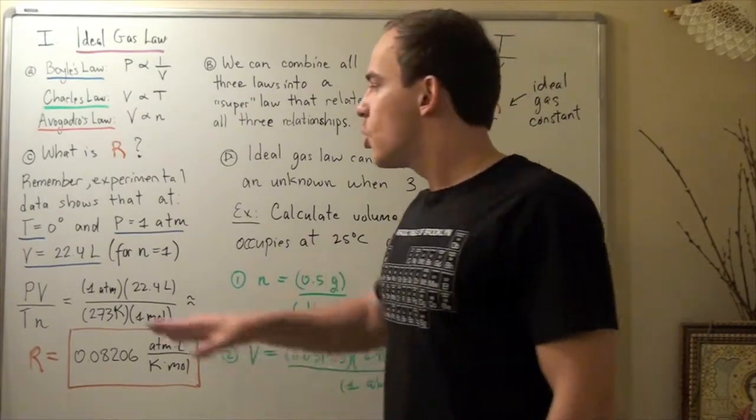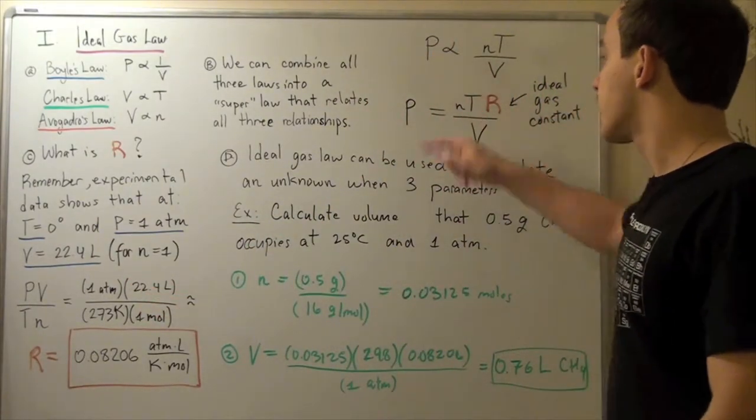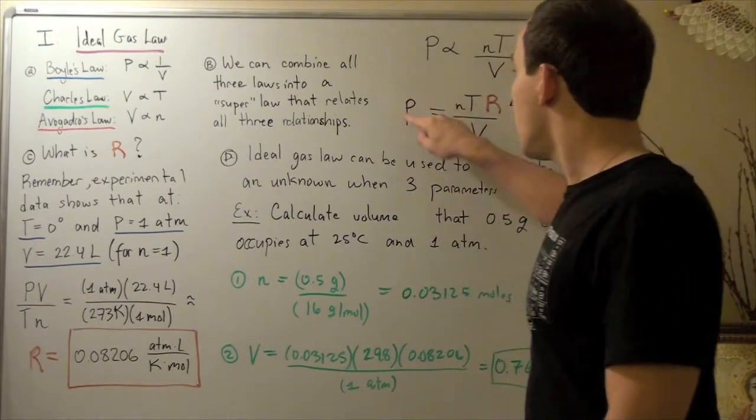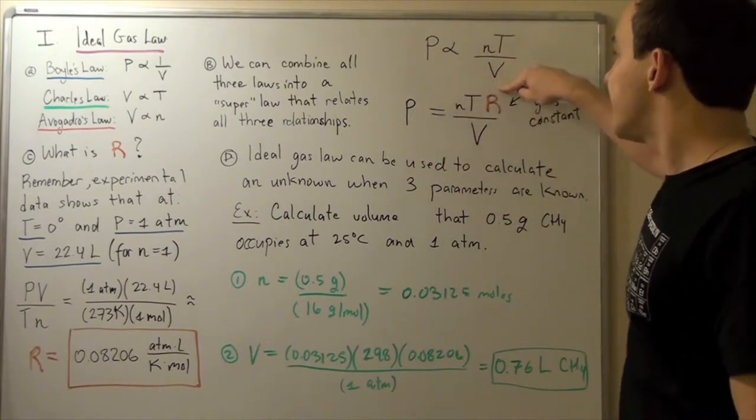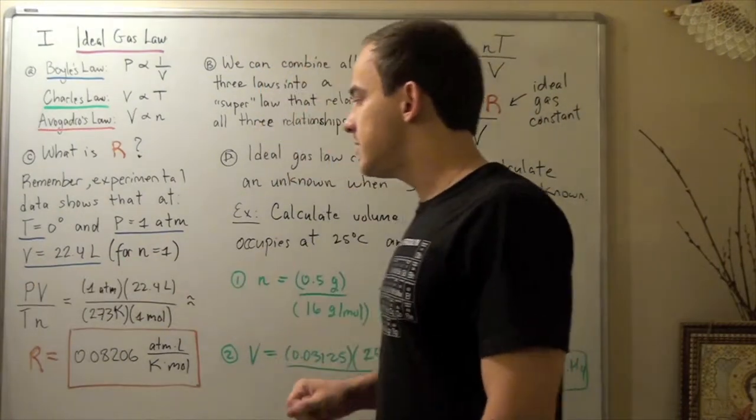And that means we have four knowns and one unknown. And that means if we plug the four knowns in, we'll get our unknown, namely our constant R.